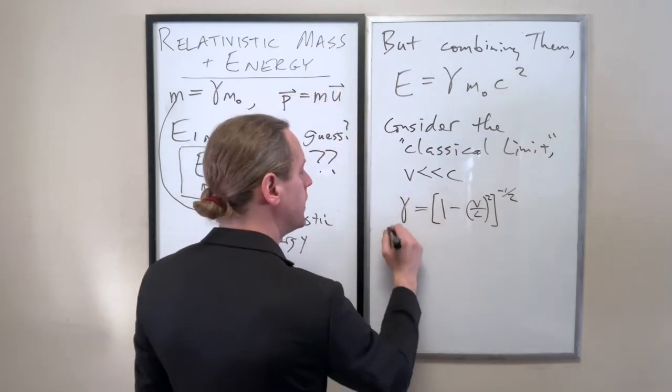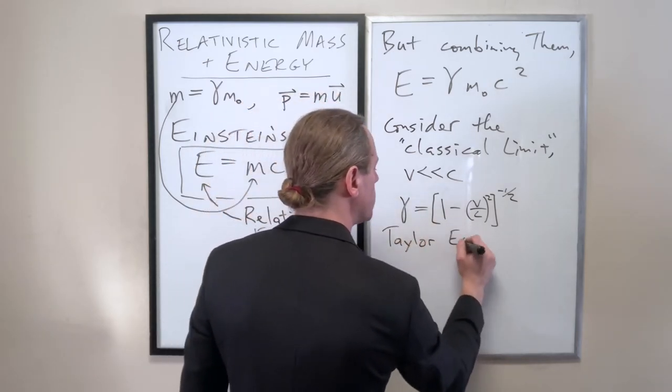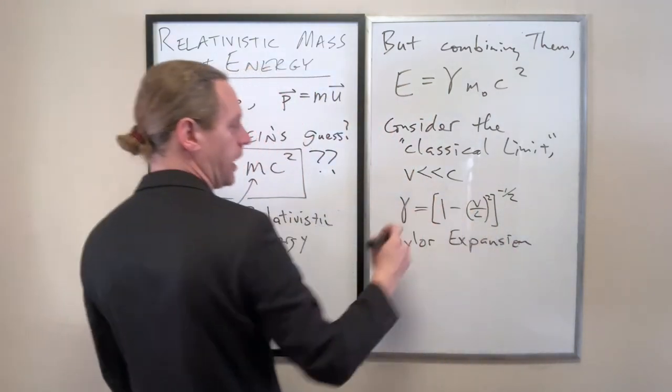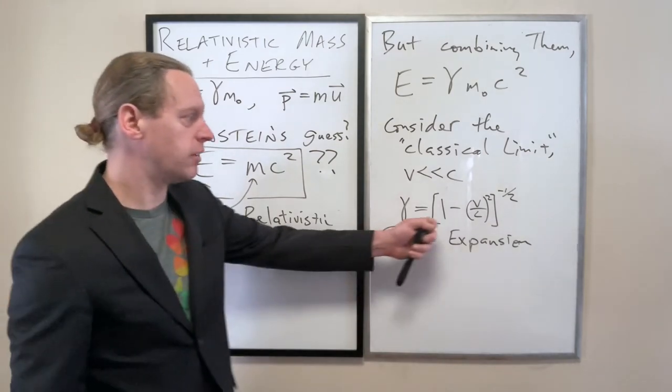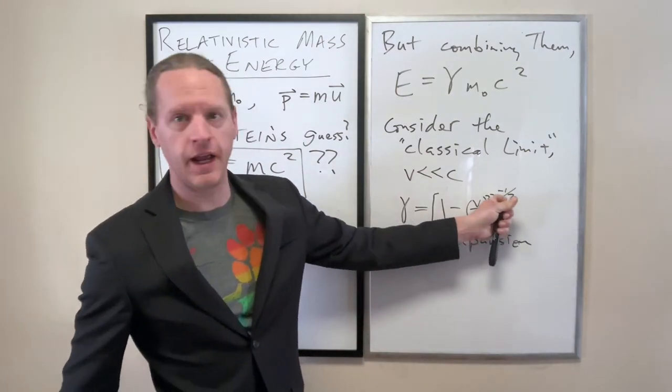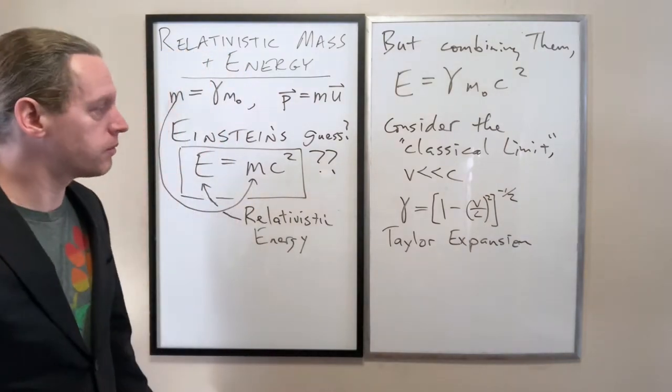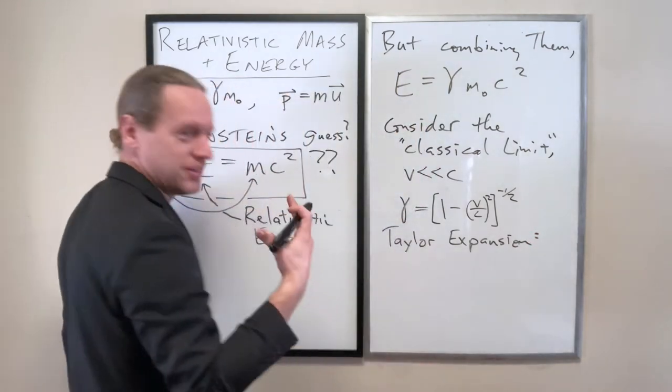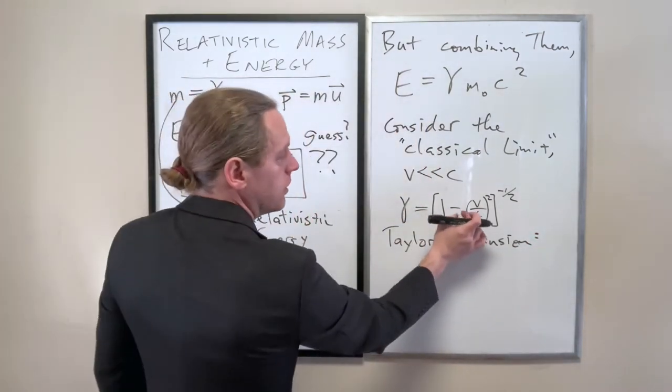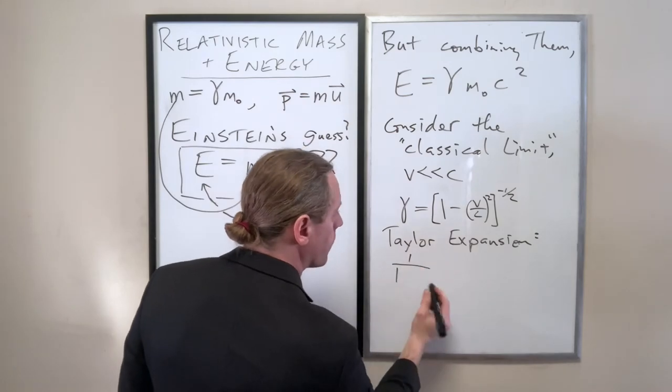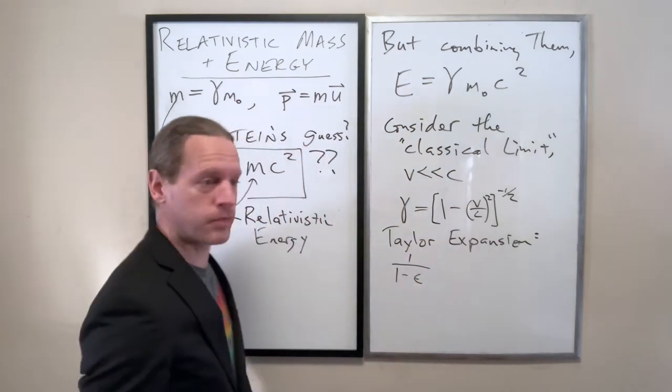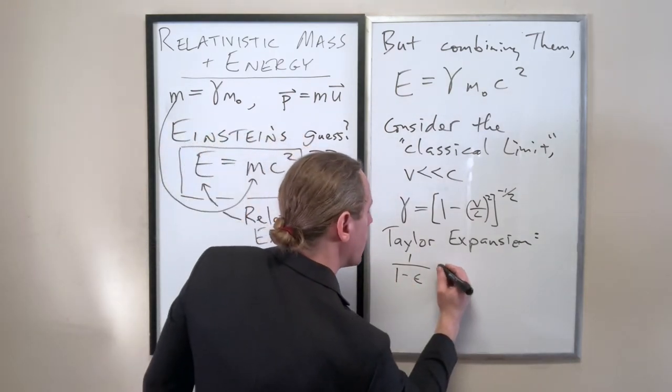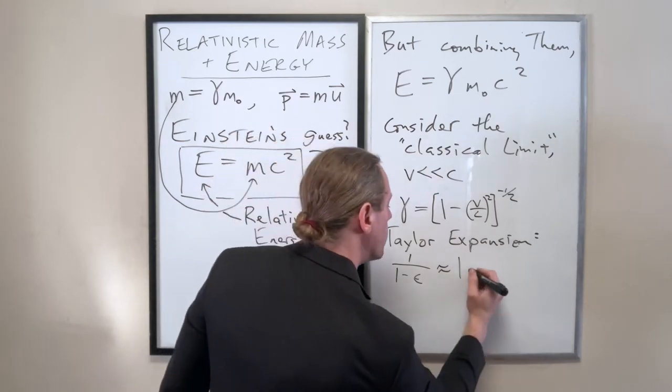1 minus V over C squared to the minus a half. So if we take the Taylor expansion for very small values of that little guy there. So replace it with like a delta. The Taylor expansion of 1 minus delta squared to the negative root, negative square root. What we get out is an expression that is super useful to use.